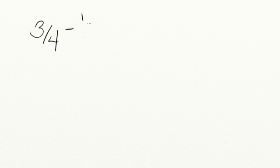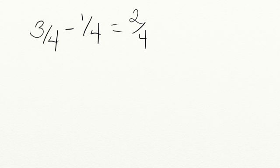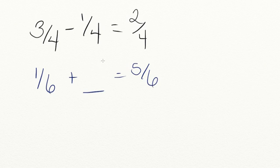Let's go ahead and practice what you've learned so far in today's lesson. If you have three fourths and you subtract one fourth, how many fourths do you have left? We keep the denominator the same and subtract the numerators, so three minus one equals two fourths. Let's try another one. If I have one sixth and I add a mystery number to this one sixth and suddenly have five sixths, what am I adding? We know our denominators stay the same and one plus four equals five, so this must be four sixths.